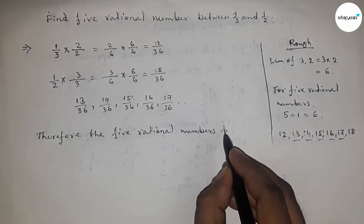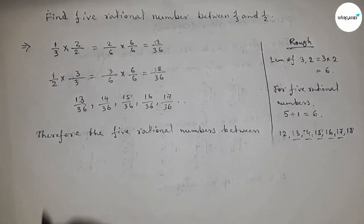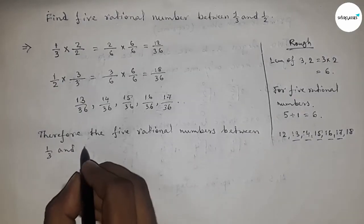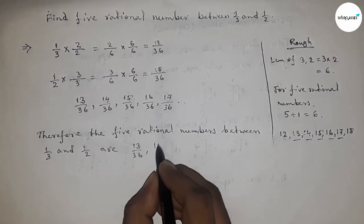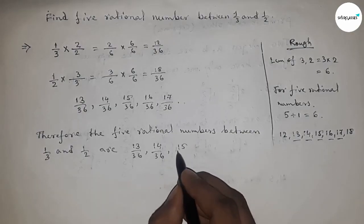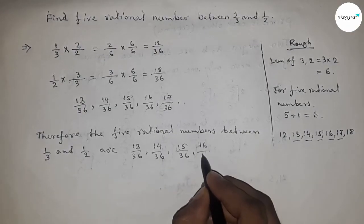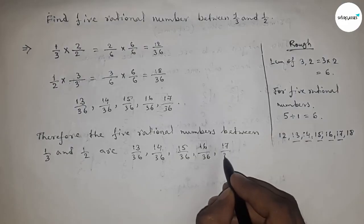Therefore, the five rational numbers between one upon three and one upon two are thirteen by thirty-six, fourteen by thirty-six, fifteen by thirty-six, sixteen by thirty-six, and seventeen by thirty-six.